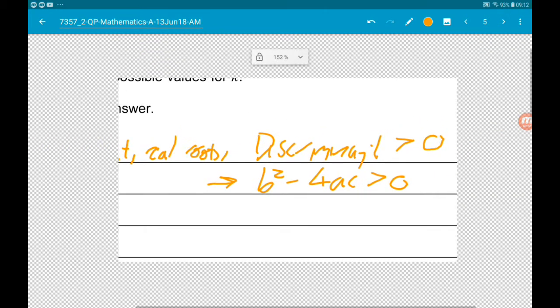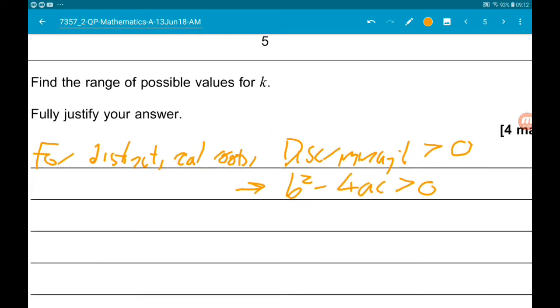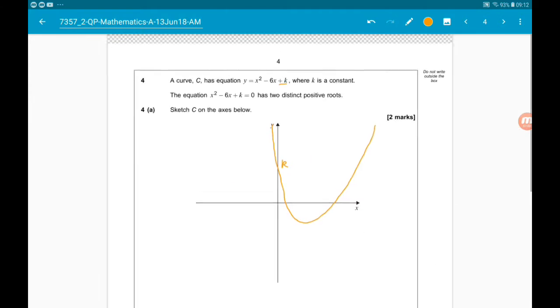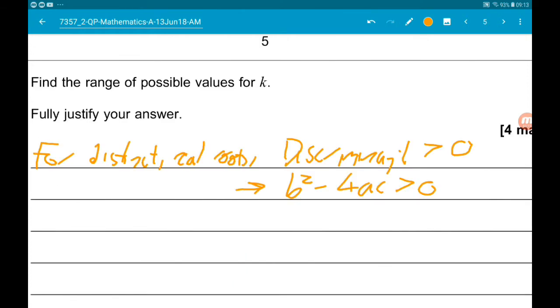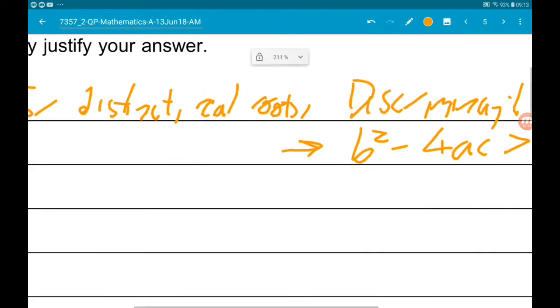So for us, a is 1, b is minus 6, and c is k. Therefore a is 1, b is minus 6, c is k.